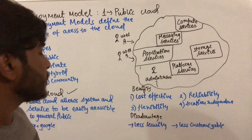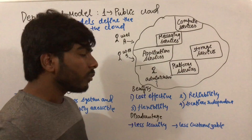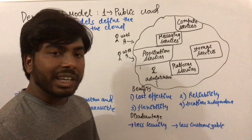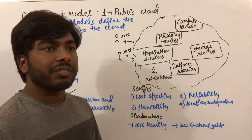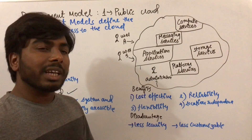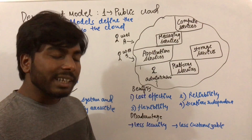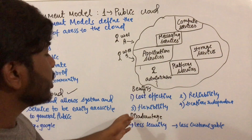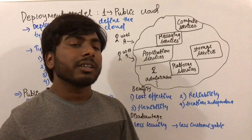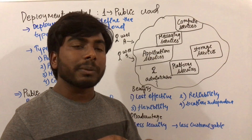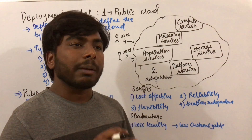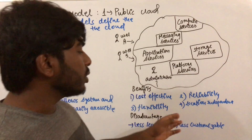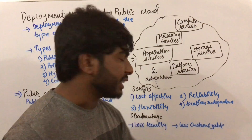Third one is flexibility. Suppose we want to add any new client or any new server to the public cloud — we can add it without any difficulty, so it is flexible in nature. It can be accessed by anyone, regardless of location, so it is location independent in nature.